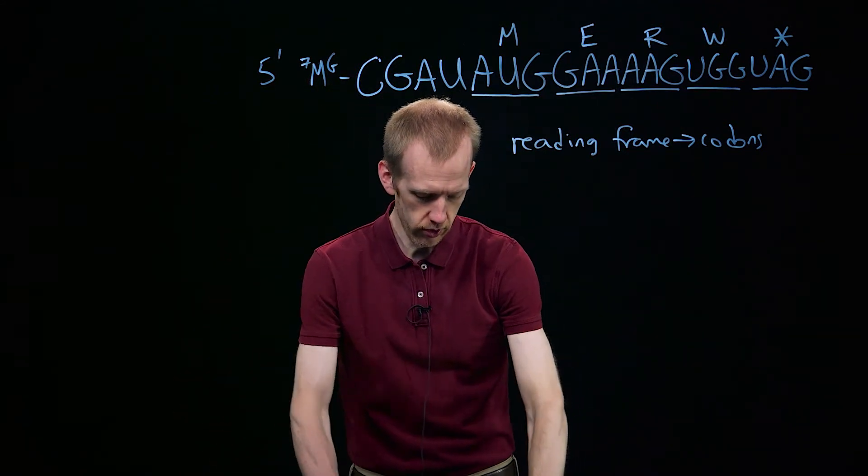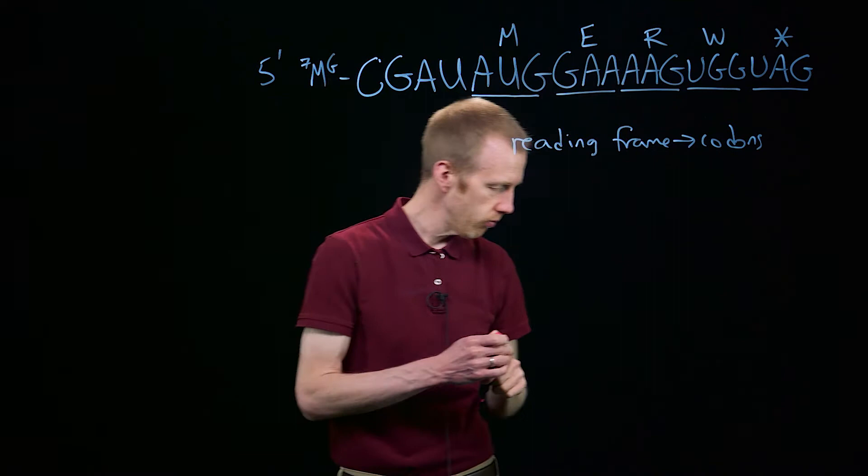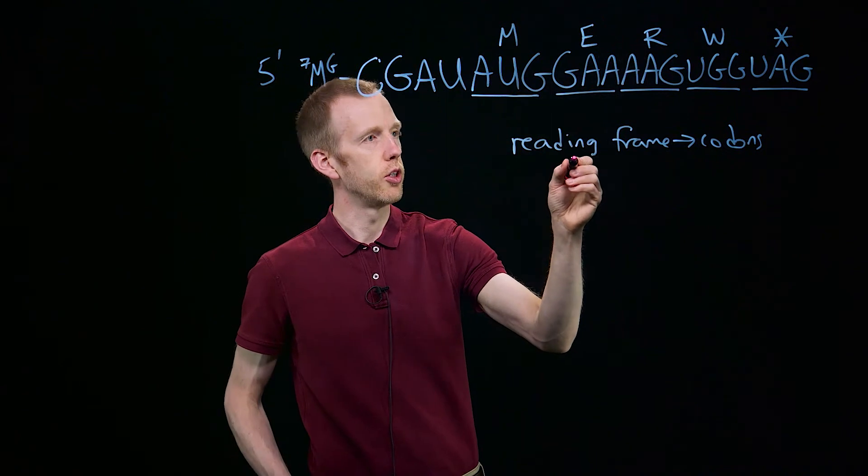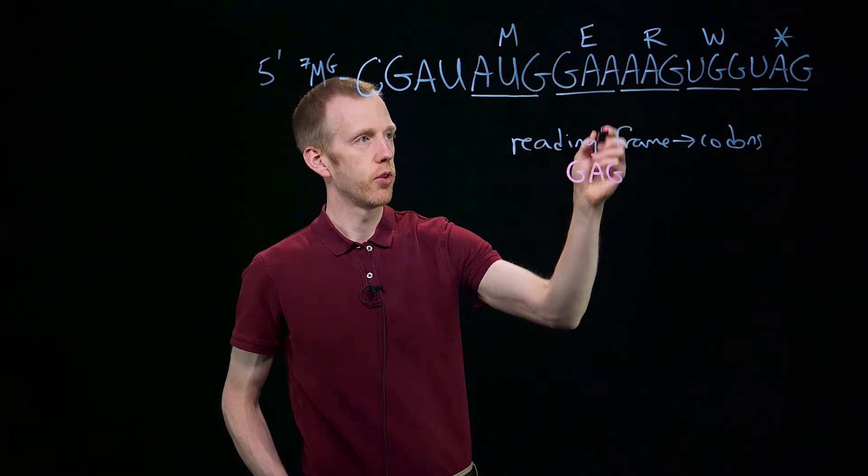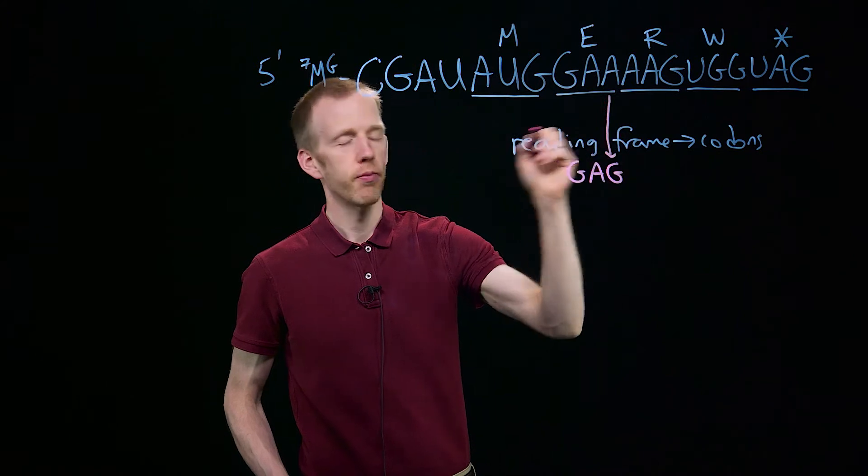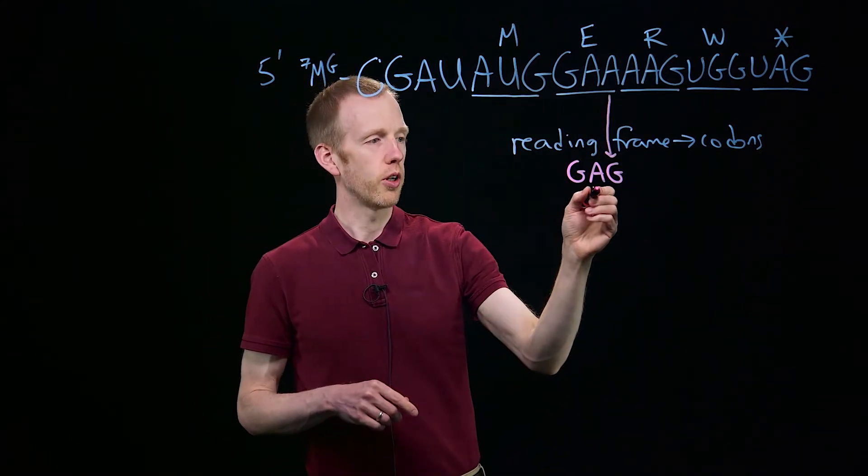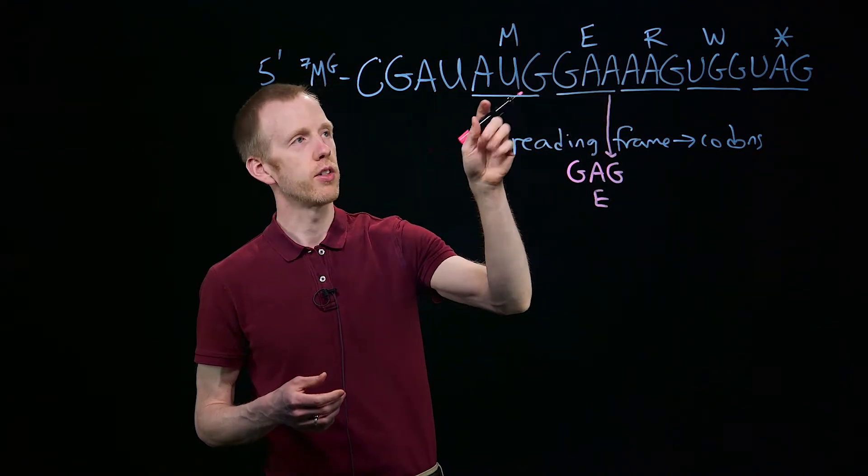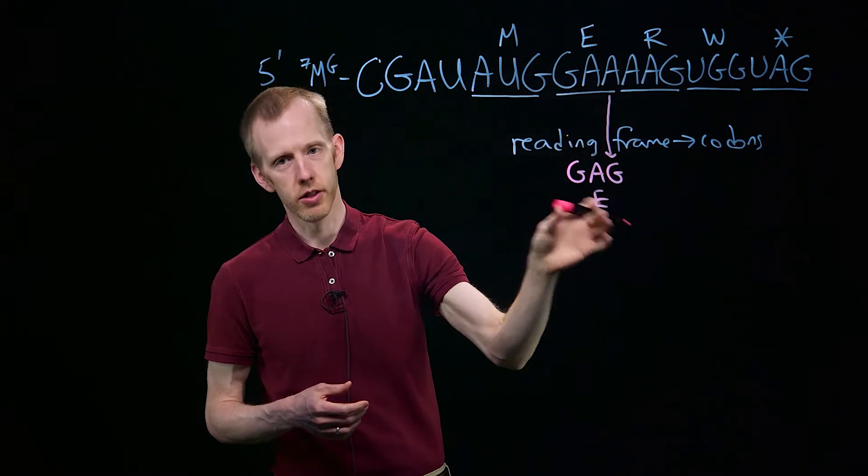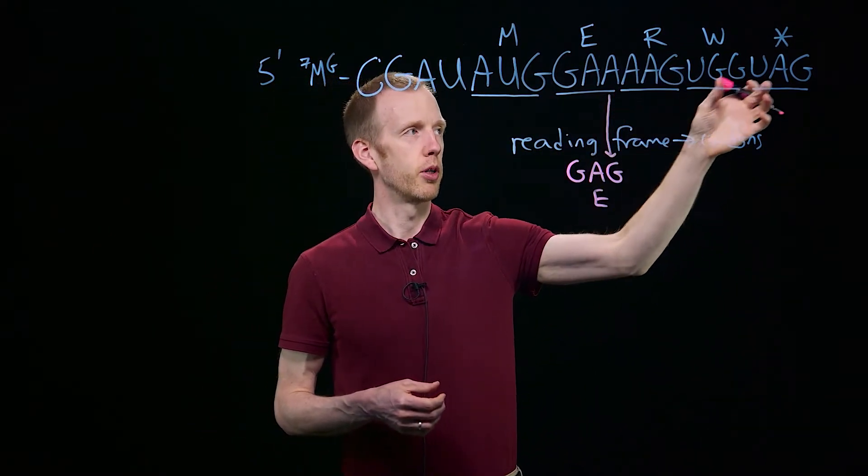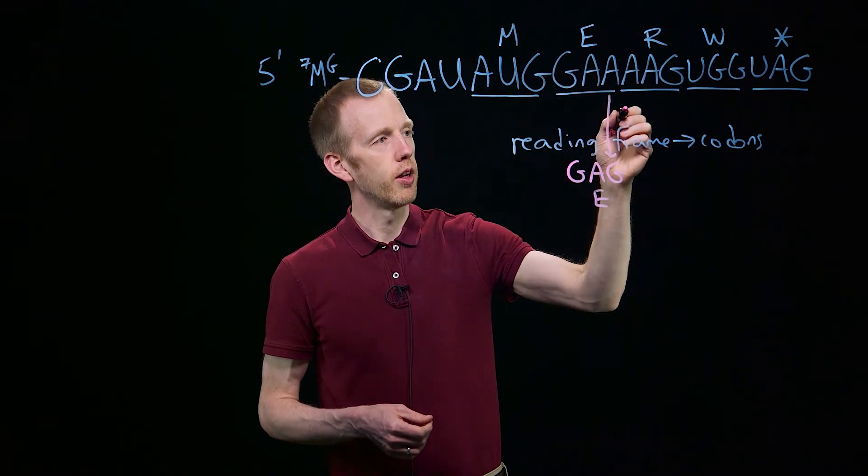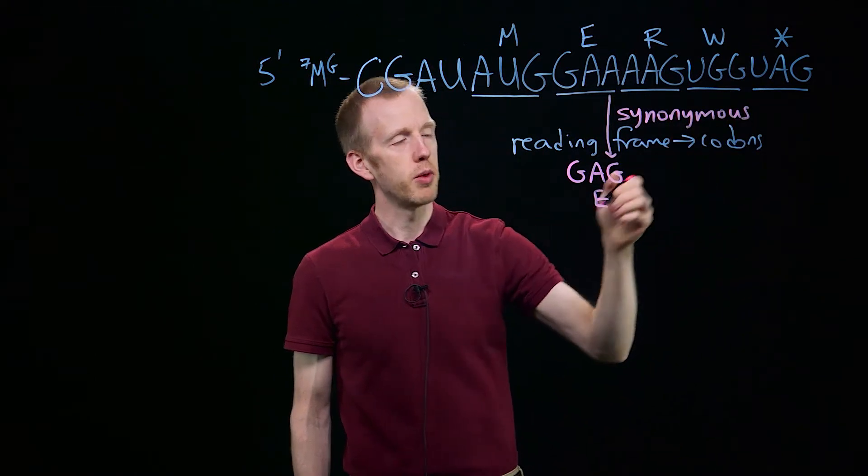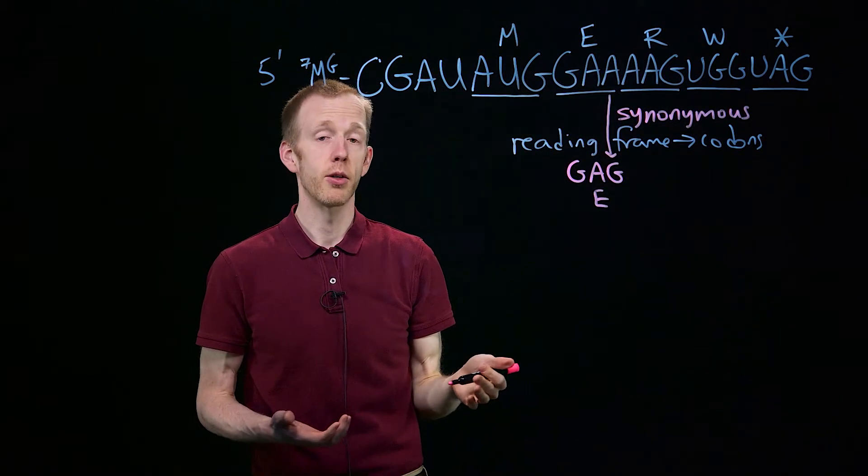Now let's look at some mutations and how those can affect this gene. The first one is what happens if we change this third A to G, a mutation from A to G. In this case, GAAG also encodes glutamic acid, the amino acid E. So there's no change in the protein sequence. We get AUG, GAG, still glutamic acid, and then R, W, and the stop codon. This is an example of what we call a synonymous mutation. Synonymous because it does change the nucleotide sequence, but the amino acid sequence doesn't change.